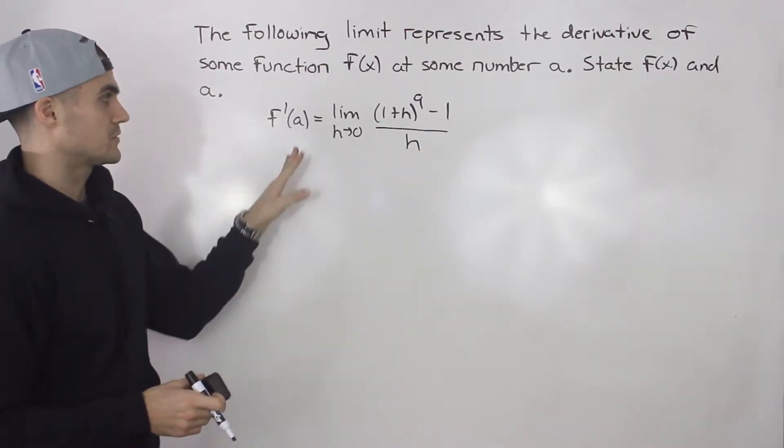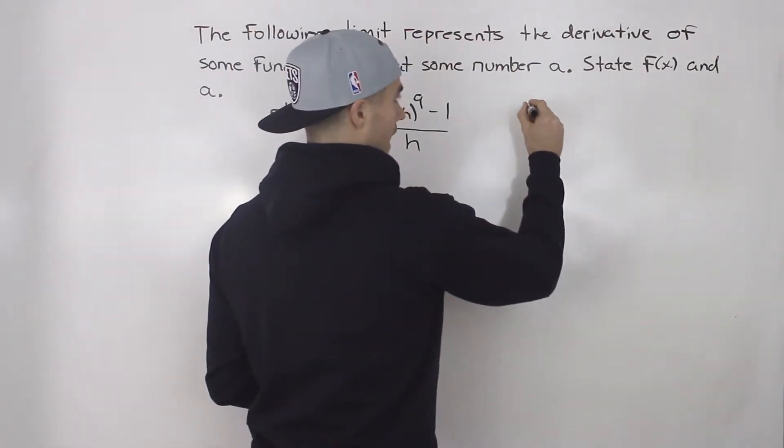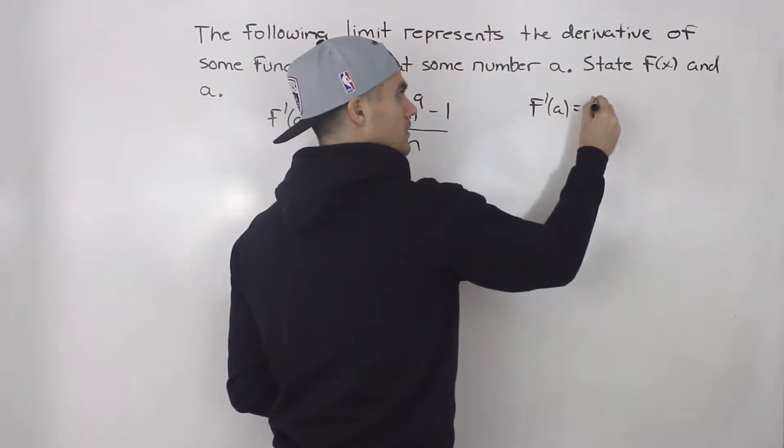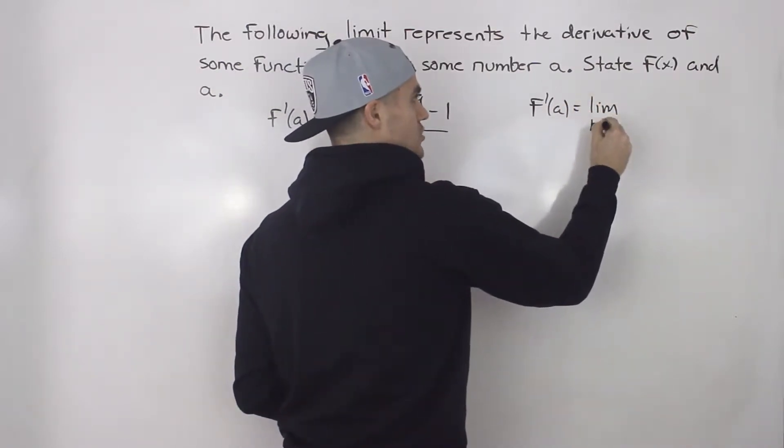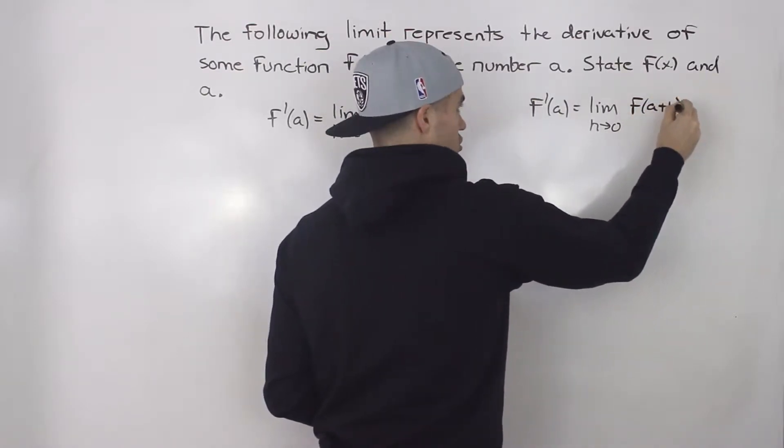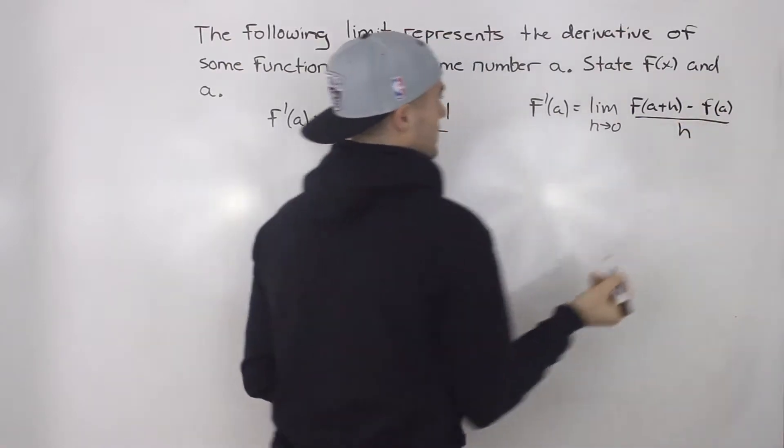So notice that we're dealing with the derivative and we're dealing with first principles, and we know that f'(a) just in general is what? Limit as h goes to 0 of f(a+h) - f(a) all over h.